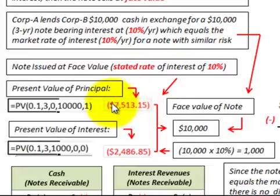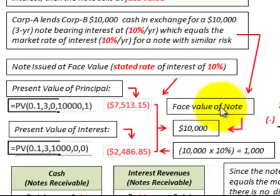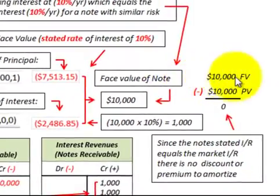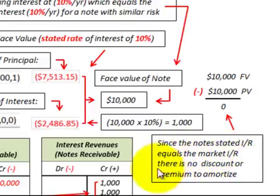The present value of the interest payments equals $2,486. Adding $2,486 to the present value of the principal of $7,513 gives us $10,000 — that's the present value of this note based on the present value of the principal plus the present value of the interest payments, which equals the face value of the note. So the face value of $10,000 minus the present value of $10,000 gives zero, meaning since the stated rate equals the market rate, there is no discount or premium to amortize.